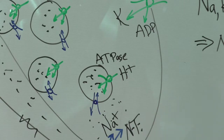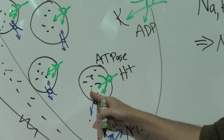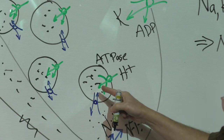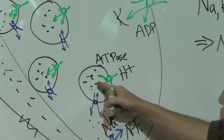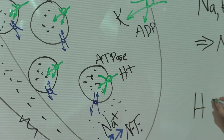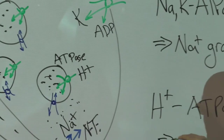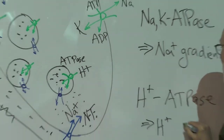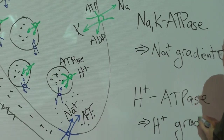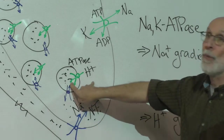The proton pump acidifies the lumen of the vesicles. It builds a proton gradient — the proton ATPase builds a proton gradient across this vesicular membrane.